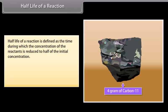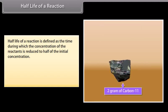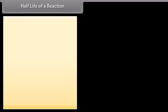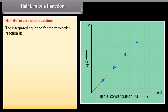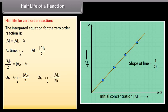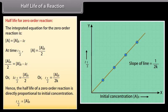Half-life of a reaction is defined as the time during which the concentration of the reactants is reduced to half of the initial concentration. It may also be defined as the time required for the completion of half of the reaction. It is denoted by T½. For a zero-order reaction, the integrated equation is A = A₀ − KT; at T½, A = A₀/2. So A₀/2 = A₀ − KT½, giving KT½ = A₀/2. Therefore, T½ = A₀/(2K). Hence, the half-life of a zero-order reaction is directly proportional to the initial concentration.